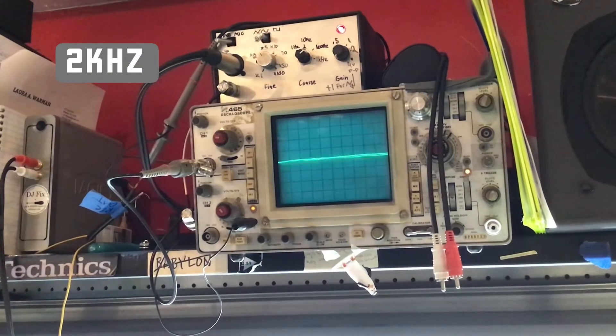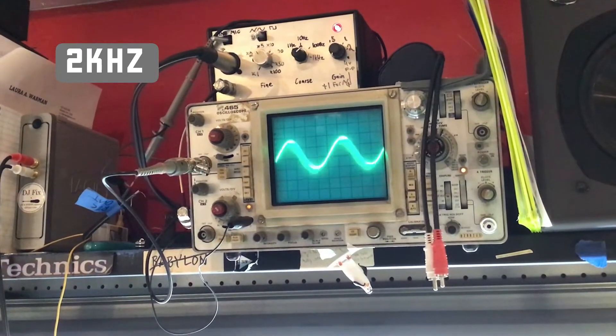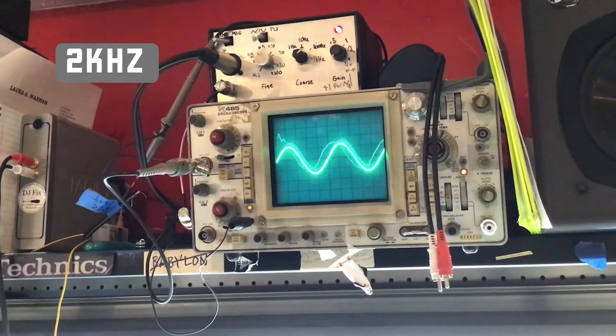2,000 cycles. And now 2k, looks like we're kind of back to being linear again. So nice, good, strong, kind of lower mid frequency.